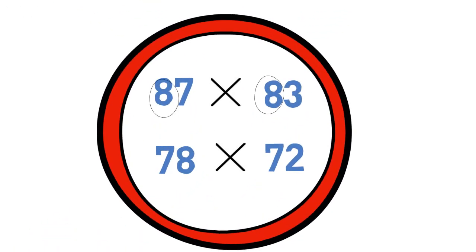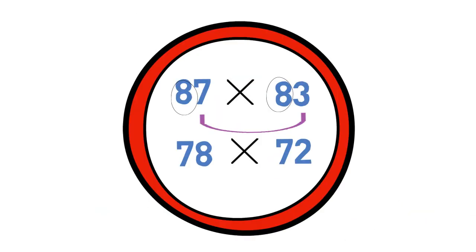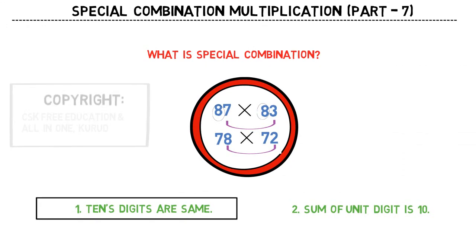And the second one is the sum of the unit digits is 10. In the first one 7 plus 3 is 10, second one 8 plus 2 is 10. These numbers satisfy the rule of the special combination multiplication. Whenever we have these kinds of conditions we can apply this rule.